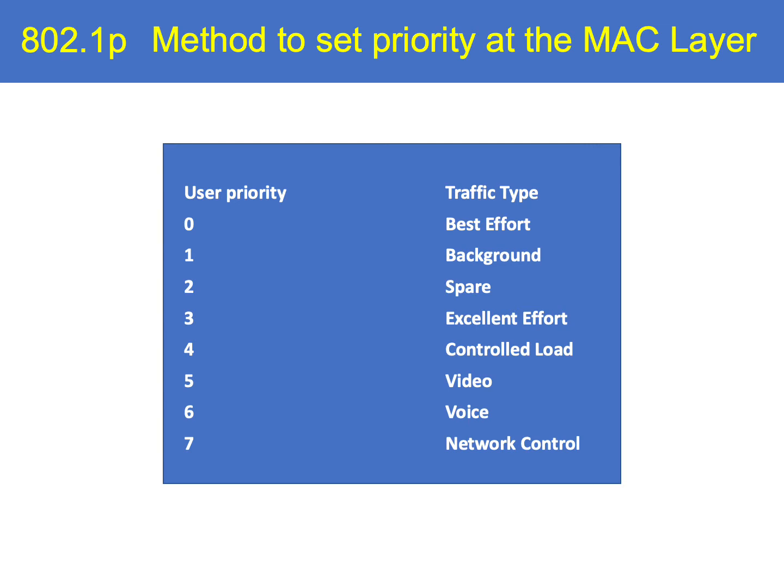So how are we going to set up a lossless Ethernet environment that will enable us to transport our fiber channel over Ethernet traffic? Well, to begin with, one of the tools we can use is 802.1p — an IEEE standard that defines eight different traffic classes, from best effort to the highest priority for network control.